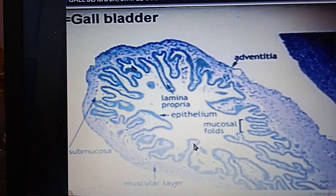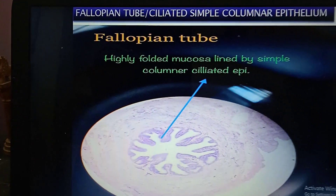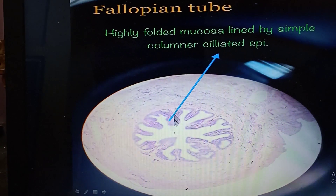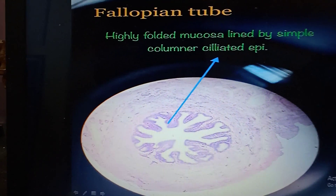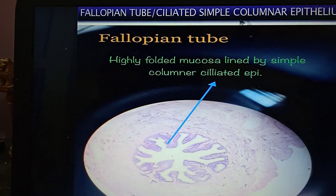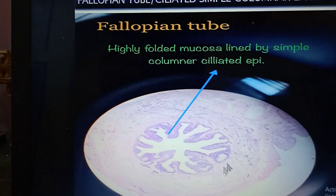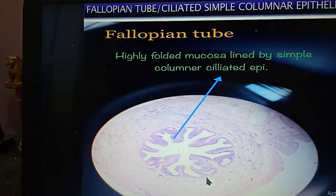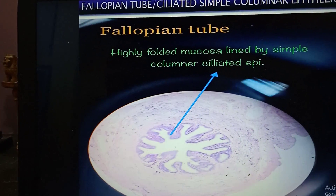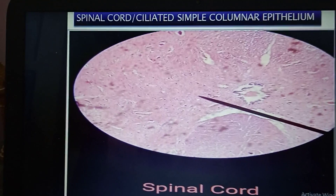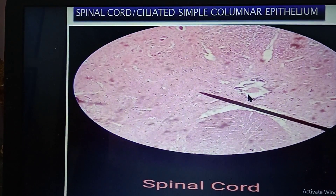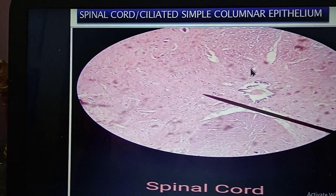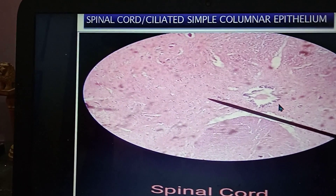This is the fallopian tube, which looks like highly folded mucosa lined with simple columnar epithelium. You have to write ciliated simple columnar epithelium for the fallopian tube — it is highly folded mucosa having ciliated as well as non-ciliated columnar epithelium. This next slide is also ciliated simple columnar epithelium: the central canal of the spinal cord lined with ciliated simple columnar epithelium.